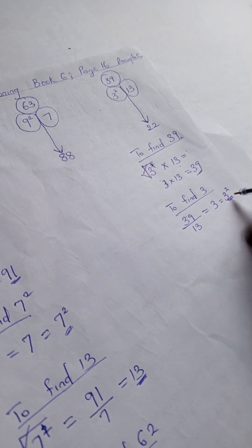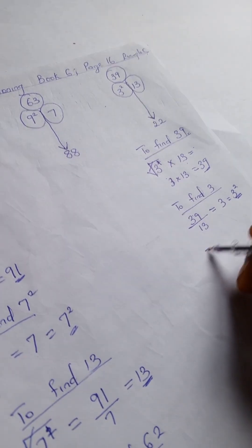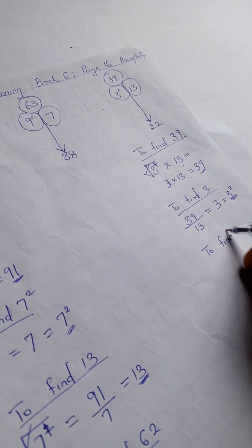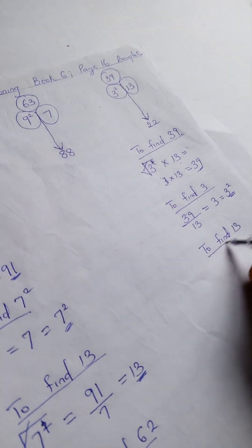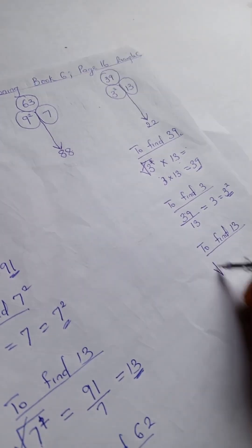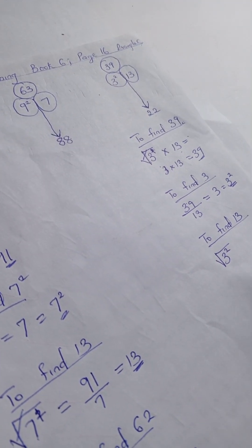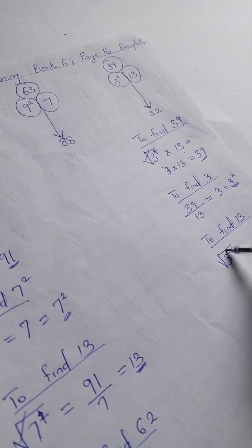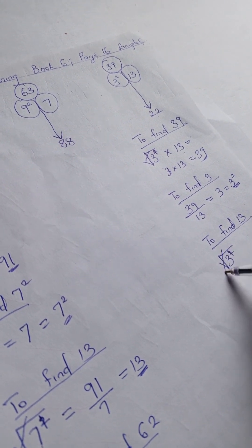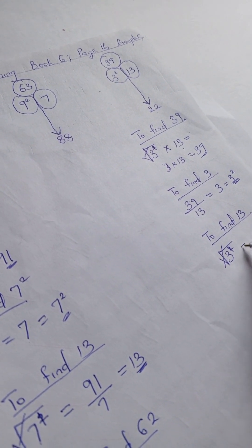To find 13, we have our square root of 3 squared. Because we want to get a number, when you divide, square cancels out the square root. So we have our 39 divided by the 3 here, we have 13.